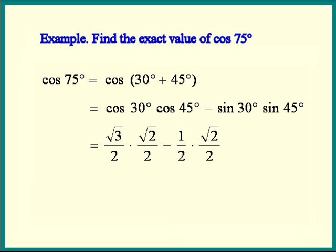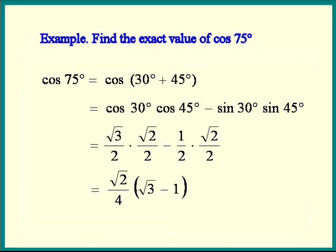Let's think a little before simplifying. Notice both terms have 4s in the denominator, so let's factor out that 4. Both terms have square root 2 in the numerator, so let's factor that square root 2 out. And we are left with square root of 3 minus 1. That is the exact value of cosine of 75 degrees.